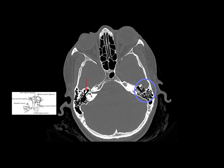For the temporal bones, assess whether a fracture is present. If so, determine whether it is longitudinal or transverse: if along the longitudinal axis of the temporal bone it is longitudinal, and if perpendicular it is transverse. Check whether it involves the ossicles or the otic capsule. Also look at the mastoids for hyperpneumatization or hemomastoid.